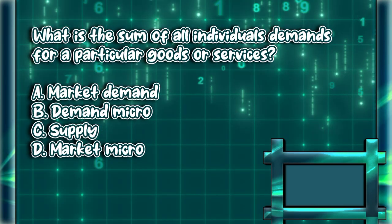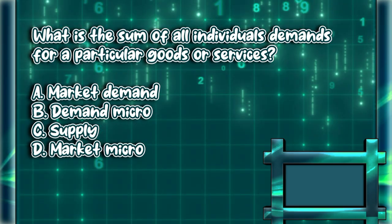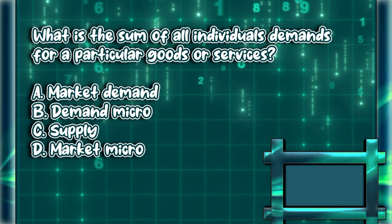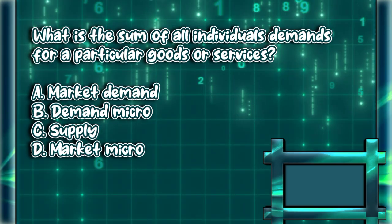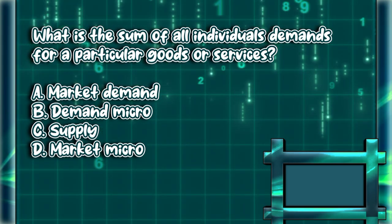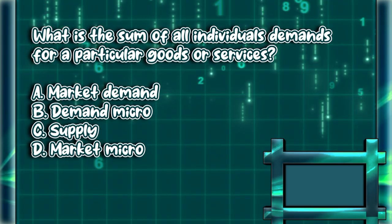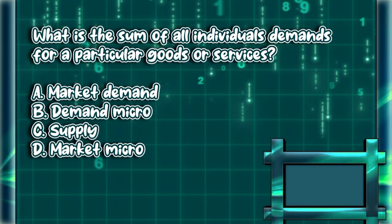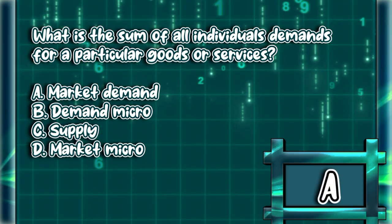What is the sum of all individuals' demands for a particular good or service? A. Market demand. B. Demand micro. C. Supply. D. Market micro. The answer is letter A.